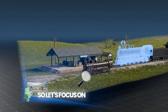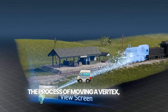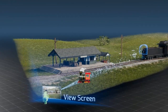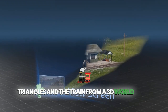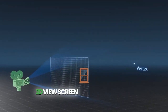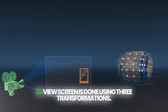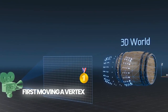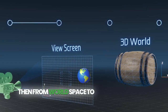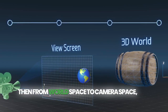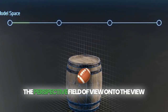Let's focus on a single vertex. The process of moving a vertex, and by extension the triangles and the train, from a 3D world onto a 2D view screen, is done using three transformations. First, moving a vertex from model space to world space, then from world space to camera space, and finally from the perspective field of view onto the view screen.